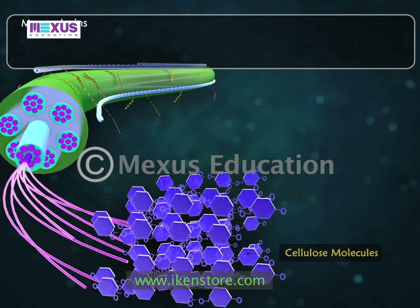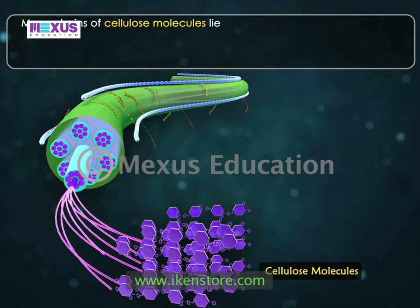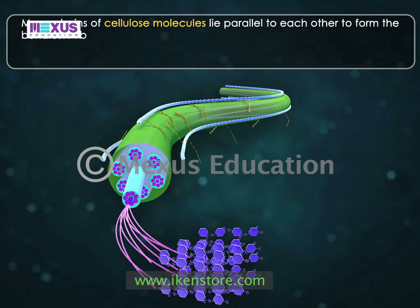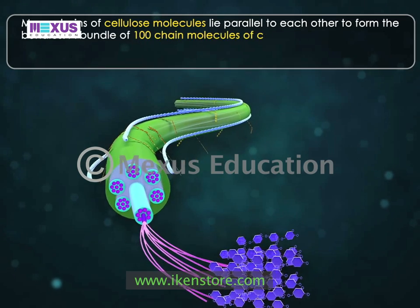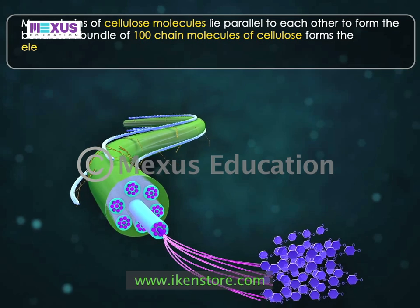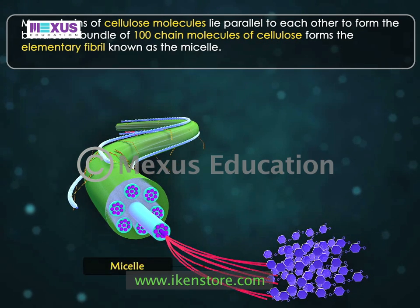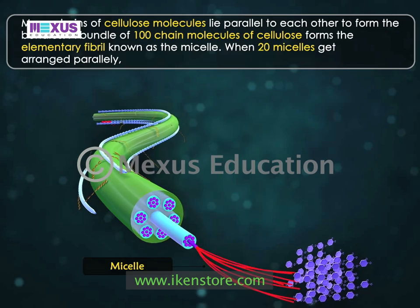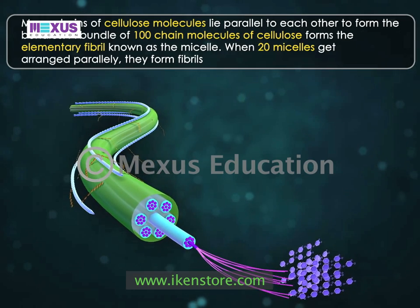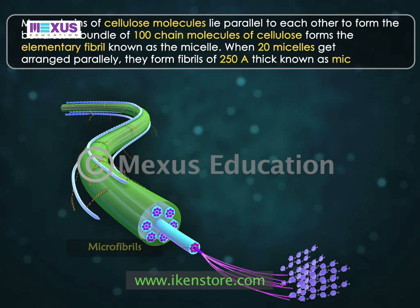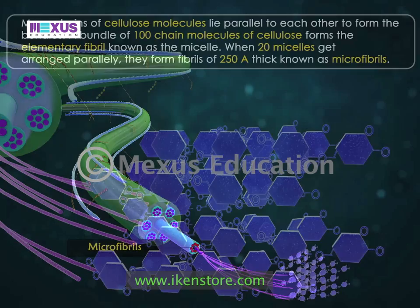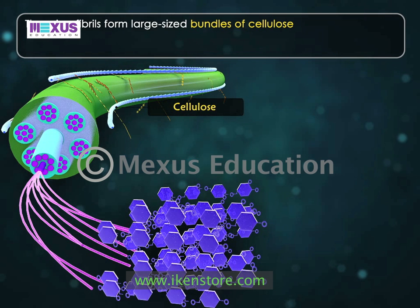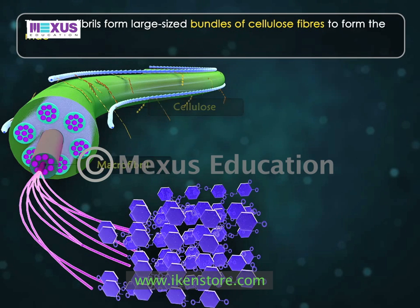Many chains of cellulose molecules lie parallel to each other to form bundles. A bundle of 100 chain molecules of cellulose forms the elementary fibril known as the micelle. When 20 micelles get arranged parallelly, they form fibrils around 250 Å thick known as microfibrils. The microfibrils form large size bundles of cellulose fibers to form the macrofibrils.